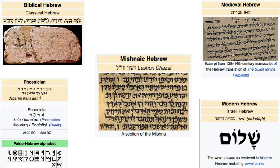Moving on to the fourth period — this is where a lot of the Hebraic studies and the education of many Hebraic peoples and Israelites comes into a lot of challenges. It becomes a very perplexing time, and that is the medieval Hebraic or medieval Hebrew writing systems or scripts.